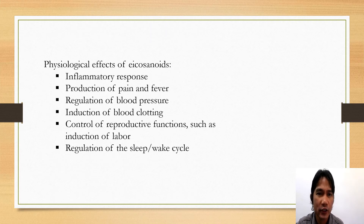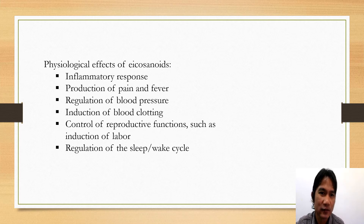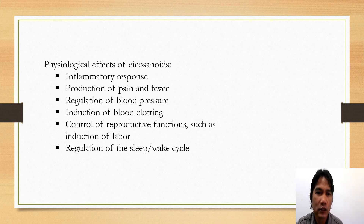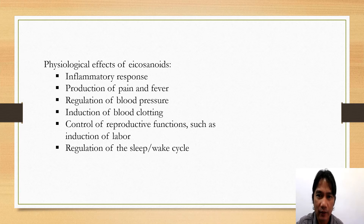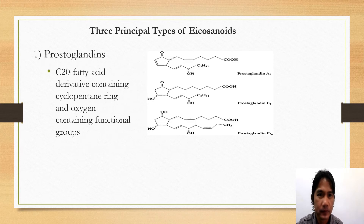The physiological effects of eicosanoids include involvement in inflammatory responses, production of pain and fever, regulation of blood pressure, induction of blood clotting, control of reproductive function, and regulation of the sleep and wake cycle.